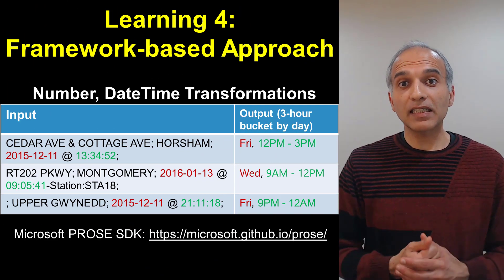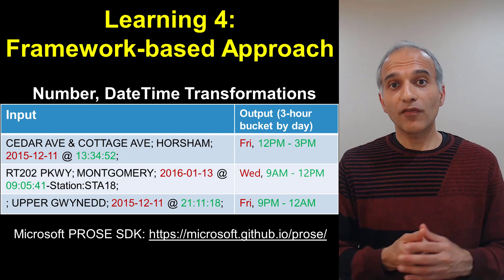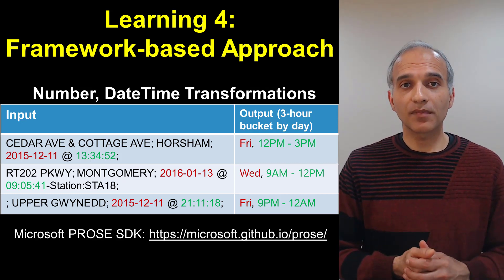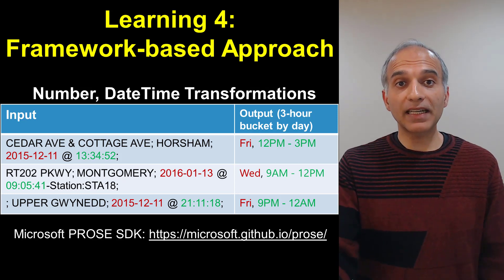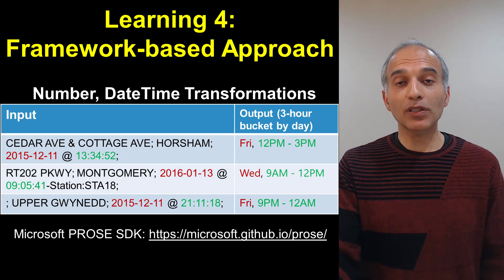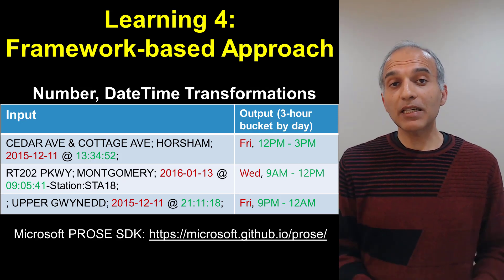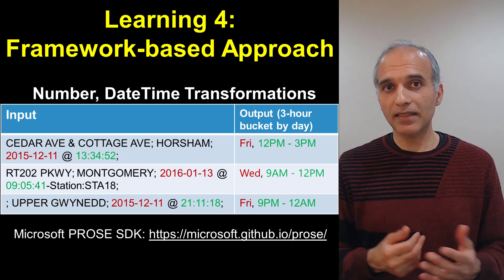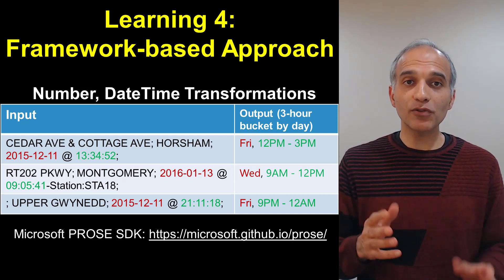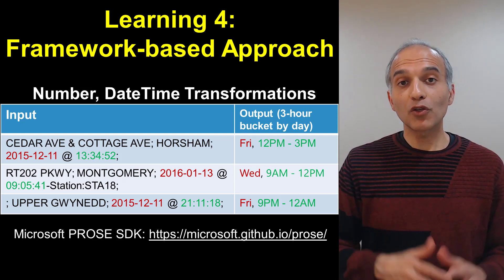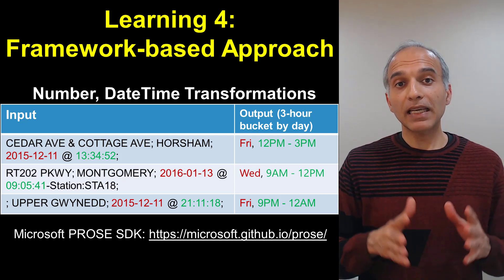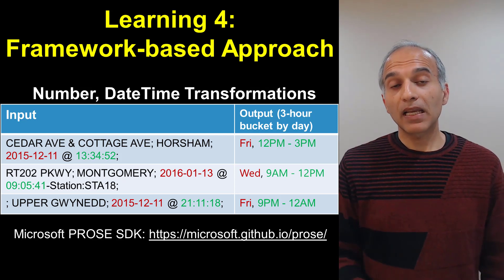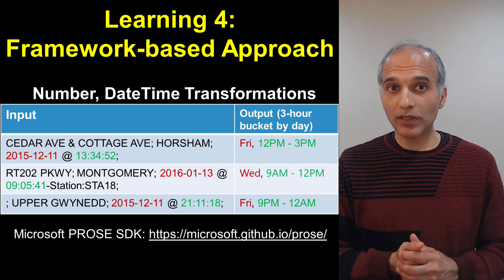For instance, consider the task of extracting the red date from a string in the input column and mapping it to the corresponding weekday, while also extracting a green time and bucketizing it into a three-hour bucket. Just imagine how much code you would have to write to accomplish this task — now this can be done using just one example. The new Flash Fill++ API can now facilitate sophisticated map transformations and is available as part of the PROSE SDK.